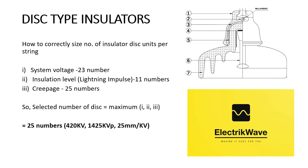As we have now calculated disk units per string: for system voltage it is 23, for insulation level (lightning impulse) it is 11, and for creepage it is 25. The selected number of disks will be the maximum of these three, which is 25 numbers.